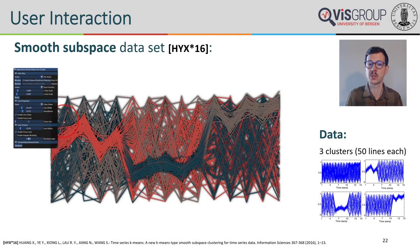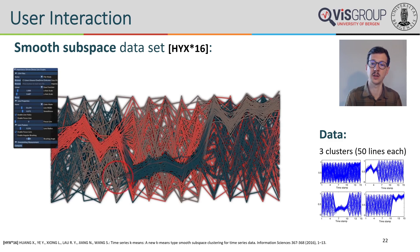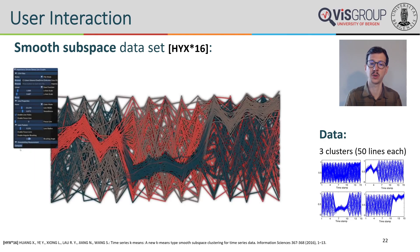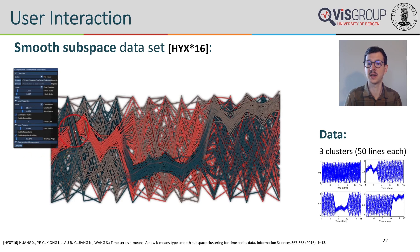Our approach also supports dynamically changing importance values, which enables various types of user interactions. To illustrate this, we implemented two well-established techniques: a magic lens that enables focus and context exploration, and angular brushing. The lens positioned at the mouse cursor has local influence on the importance of all lines within it, allowing us to see lines that pass through a region even though they are covered by other lines. Similarly, angular brushing can help to locally pull a bundle of lines with a certain angle forward, like a rubber band metaphor.